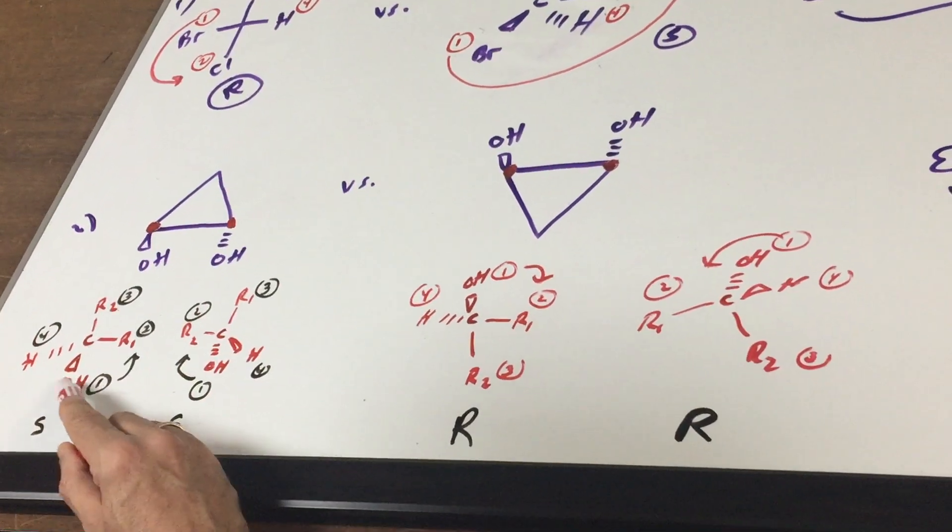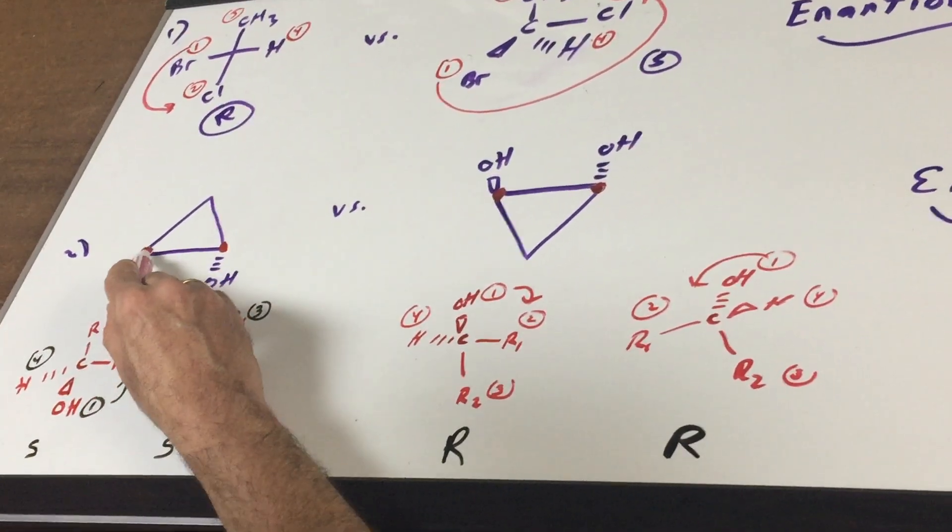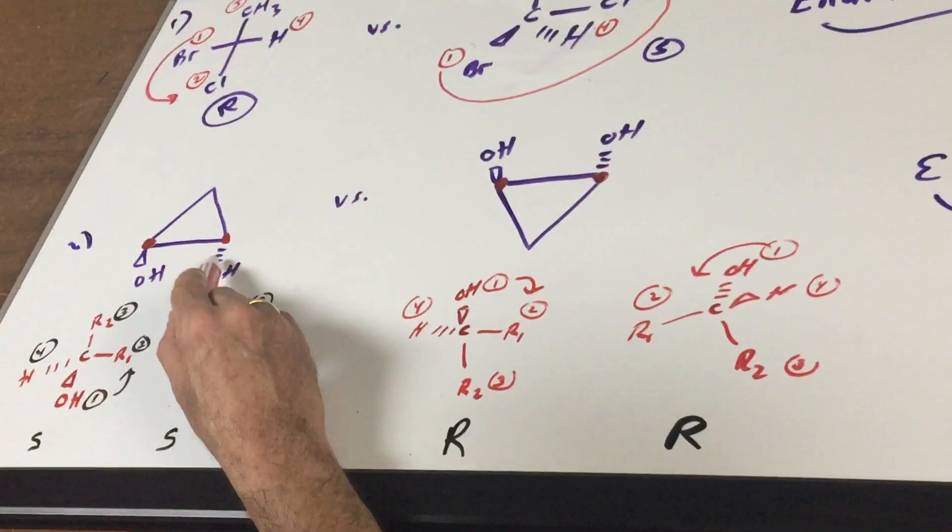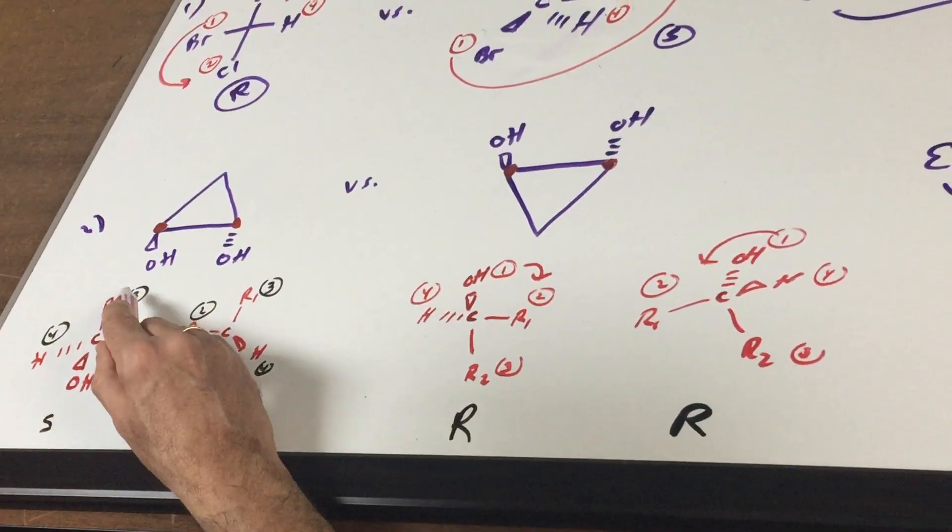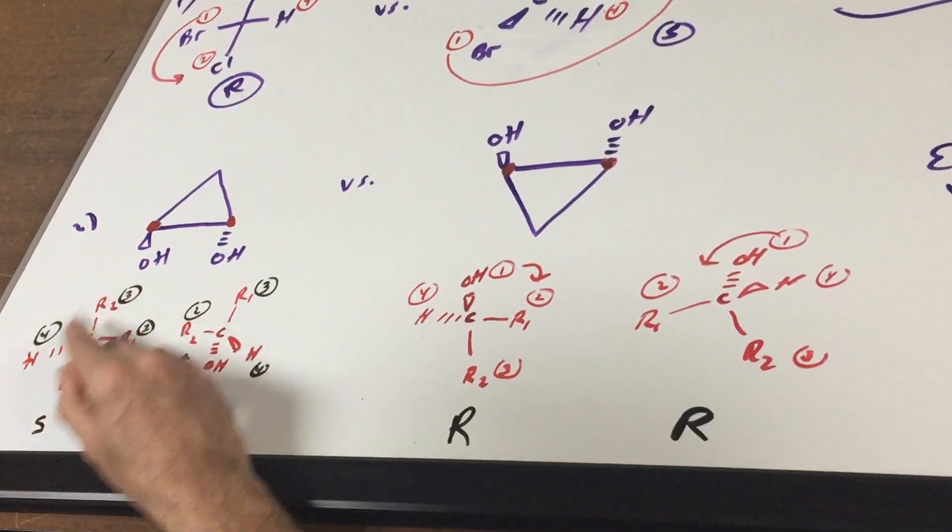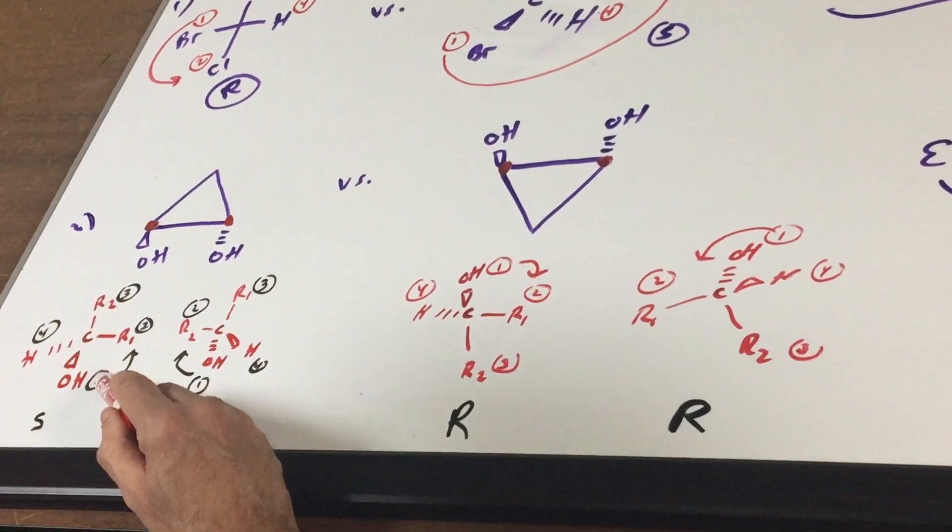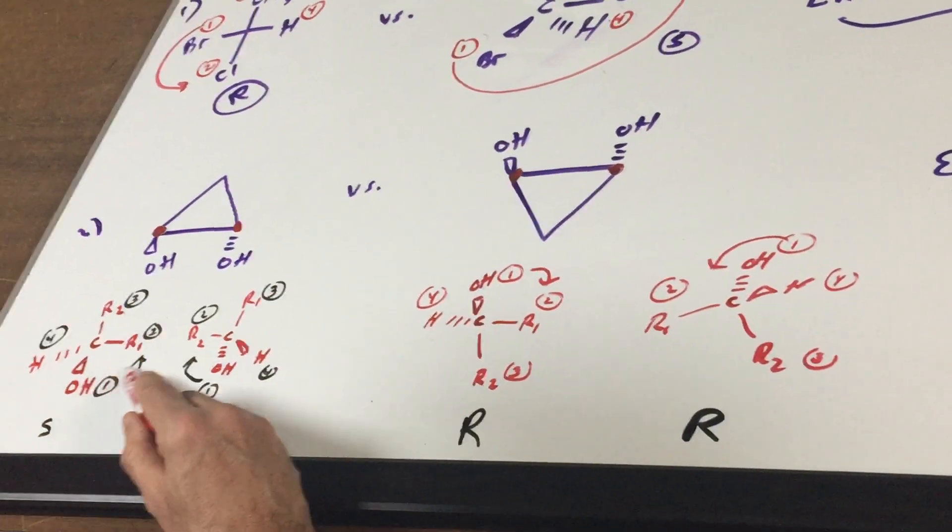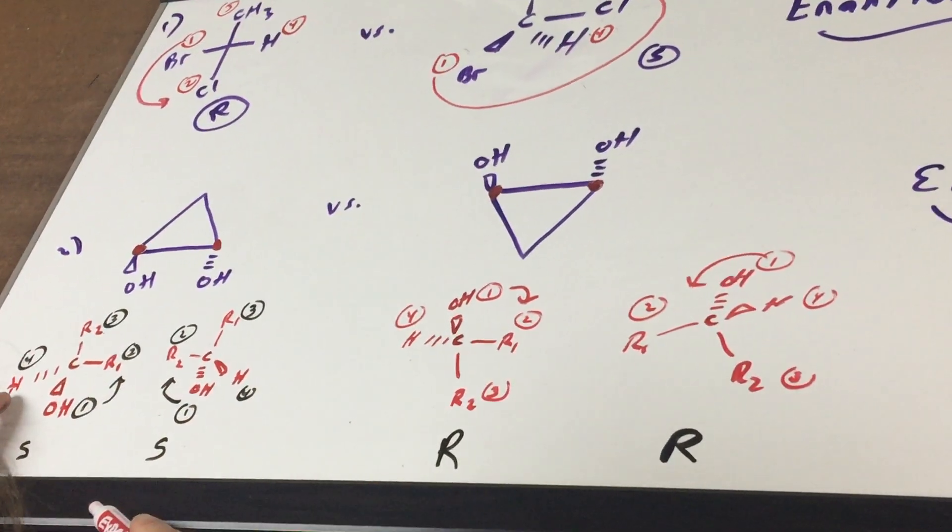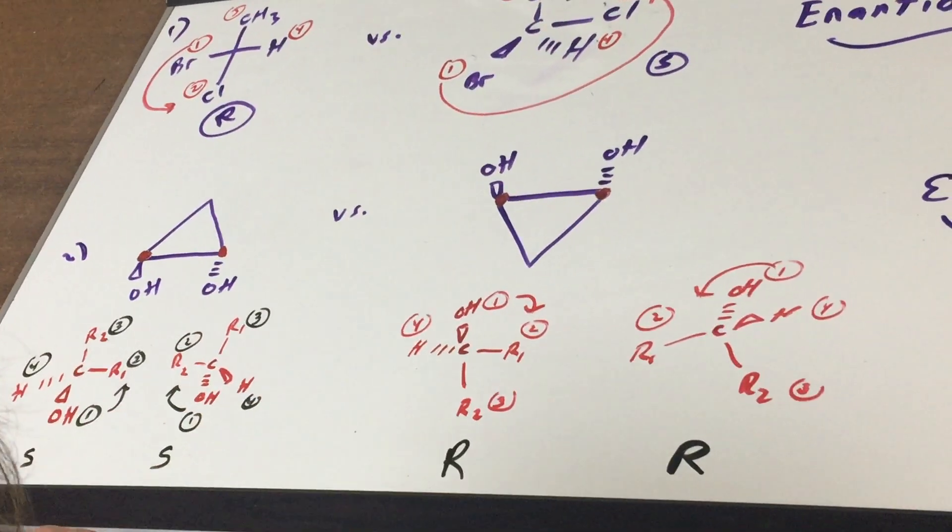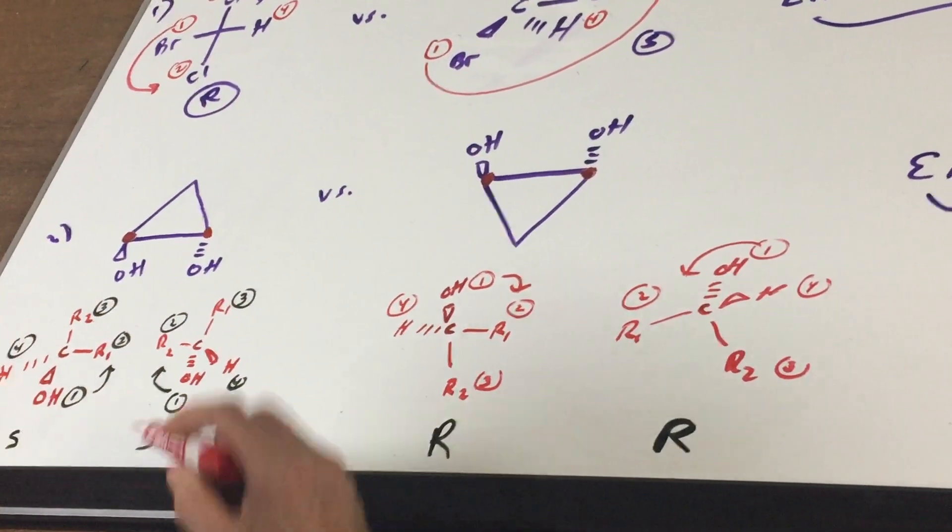The OH is priority group number one. The path going to the right has a branch point, which is an OH. So that's going to be two. Then R2 is three. And H is four. I'm going to connect one to two. It looks like an S. And thankfully, it's a dash. So that means we're in perfect reference. And therefore it's an S.